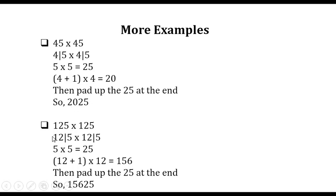In the last example, 125 times 125, we separate 5 from the rest of the numbers. 5 times 5 equals 25. And here we have 12, and we have 12. So 12 plus 1, we obtain 13. 13 times 12, we get 156. So after padding up the 25 at the end, we obtain 15,625. Thank you very much, and you are welcome.